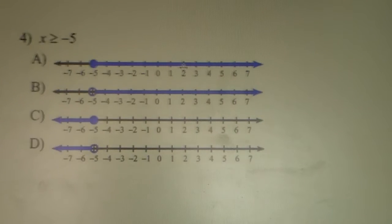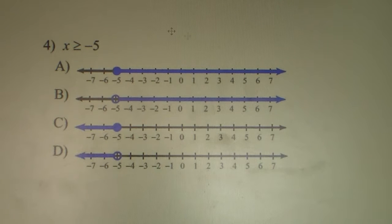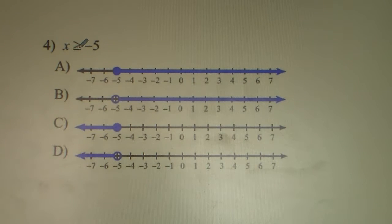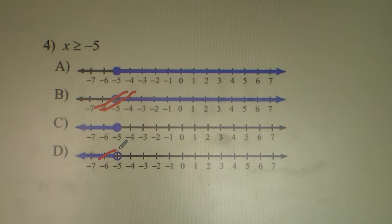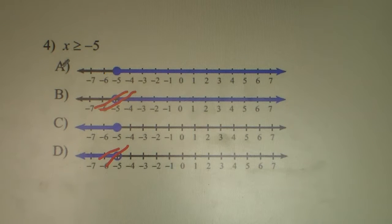Let's look at problem number 4. We have X is greater than or equal to negative 5. All of these are at negative 5. Greater than or equal to is a closed circle, so the open circle options are incorrect. It says X is greater than or equal to negative 5 — greater than is to the right, so 4 is A.